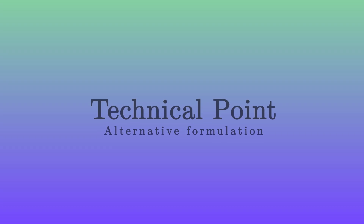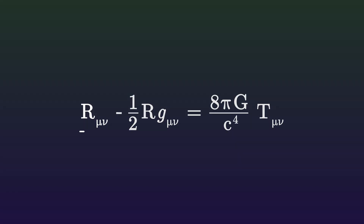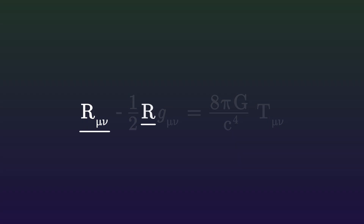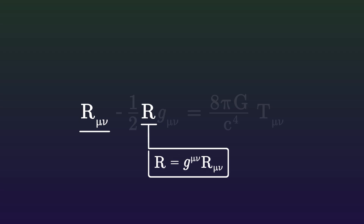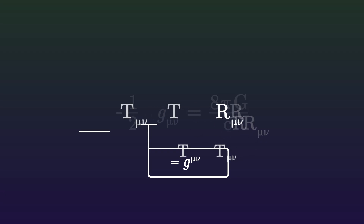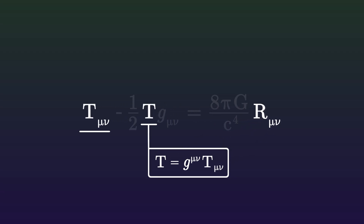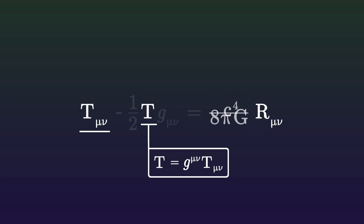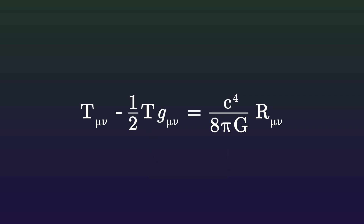In the Einstein equation, the curvature of space-time is embodied by the Ricci tensor and the Ricci scalar, which is its contraction. But in a four-dimensional space-time like ours, the equation has a very interesting symmetry: it remains valid if we swap the energy-momentum tensor with the Ricci tensor and invert the gravitational constant. This new equation is completely equivalent, and in some cases it can be easier to use.